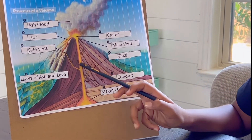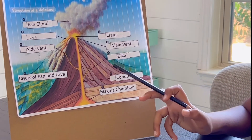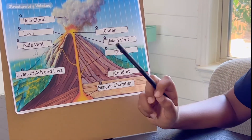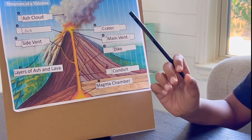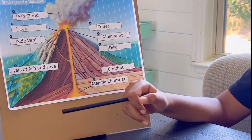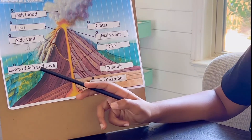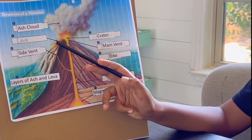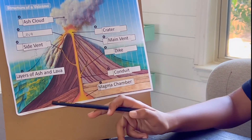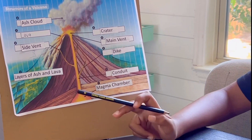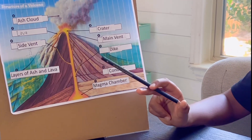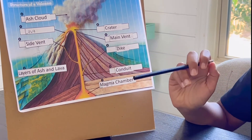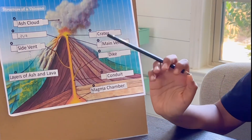A side vent is pretty much similar to the conduit, but this time it goes through a different direction, and in the end lava comes out. Last is layers of ash and lava. When lava starts to accumulate down to the earth's surface, it slowly starts to stick towards the volcano, and when they stick, they grow bigger in size. This is how it almost looks like a mountain.